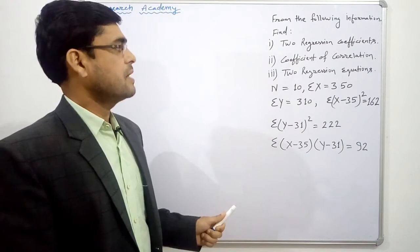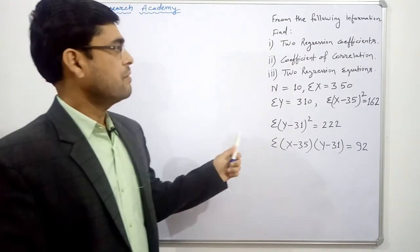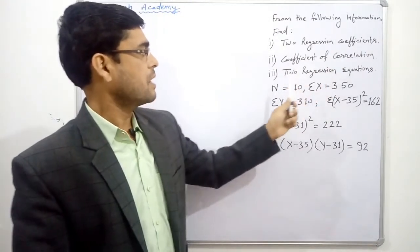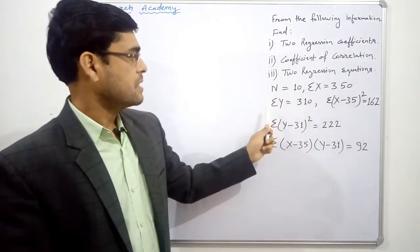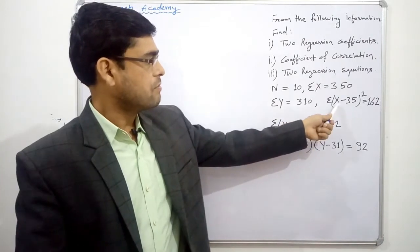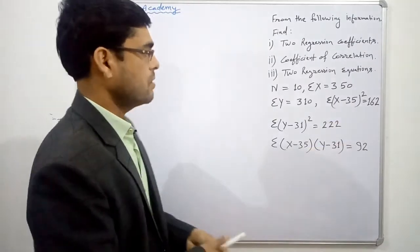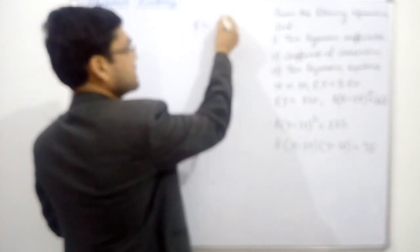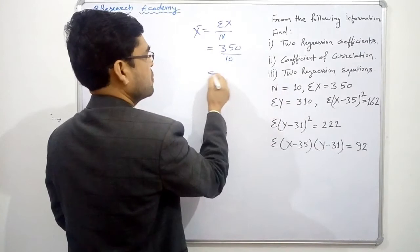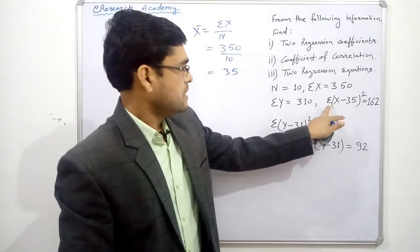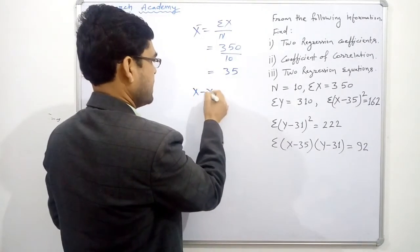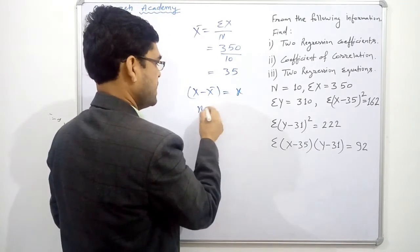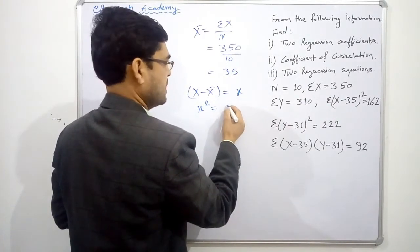We have some information given in a question, and with this information we have to find out two regression coefficients, coefficient of correlation, and two regression equations. The information is: n = 10, sigma x is 350, summation of all y series is 310. Summation of x minus 35 — here 35 is the mean, x bar = sigma x / n = 350 / 10 = 35. So this summation of (x minus 35) squared, which is (x minus x-bar) squared, equals 162.